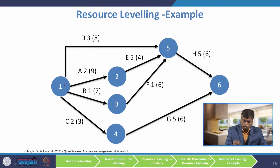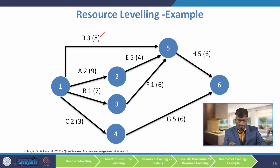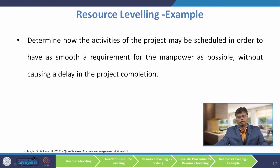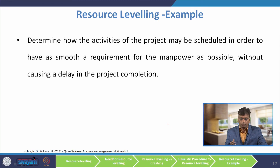There are activities 1 to 5. Activity D has a duration of 3 units of time and a manpower requirement of 8. Similarly, activities A, B, C, E, F, G, and H are given. We need to determine how the activities of the project may be scheduled in order to have as smooth a requirement for manpower as possible, without causing a delay in project completion. So we have to find the correct project schedule such that the manpower requirement is constant with no high variation.